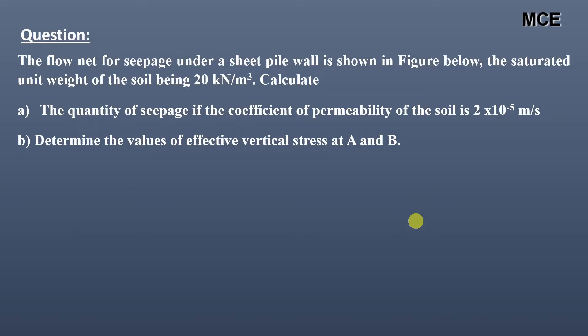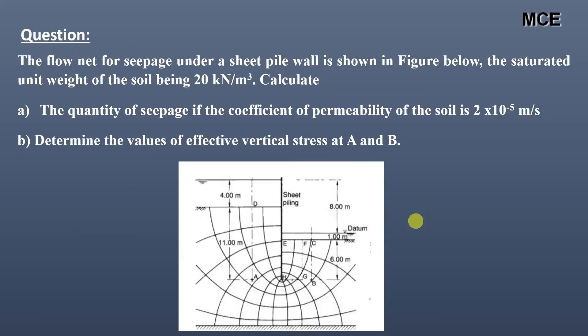Hello and welcome to Master Civil Engineering. In this video we will learn how to calculate the value of effective vertical stress in a flow net, which is usually asked in many important civil engineering exams. The question states that the flow net for seepage under a sheet pile wall is shown in the figure below.